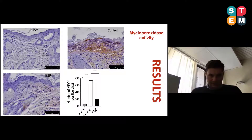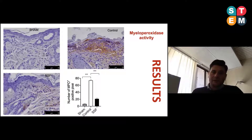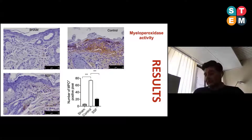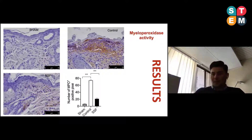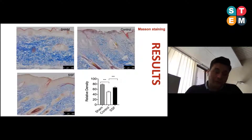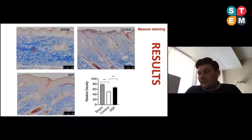We then highlighted the presence of inflammatory cells — specifically MPO-positive cells. As we can see, the snail secretion filtrate significantly reduced the expression of MPO, and this can be attributed to the anti-inflammatory activity of this compound.